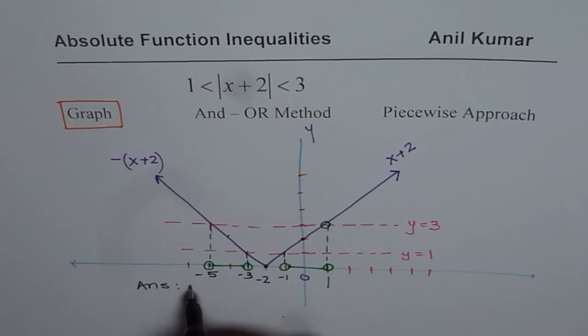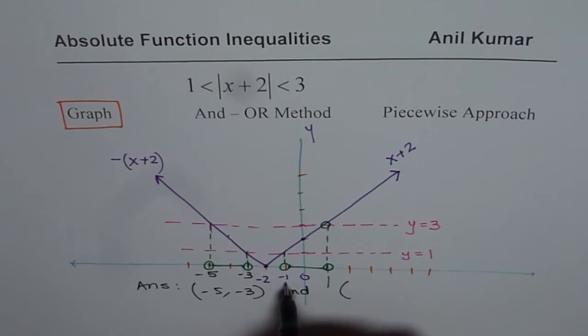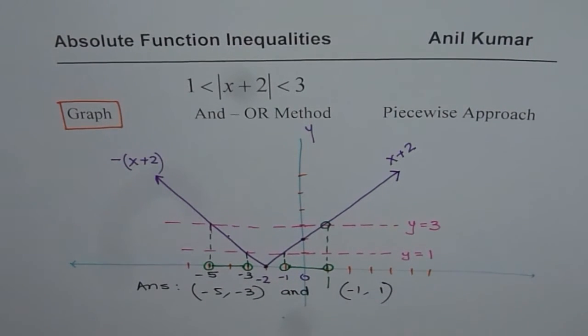So the answer is between minus 5 to minus 3 and minus 1 to 1. So that becomes the solution for this absolute inequality. I hope you understand and appreciate how we can solve absolute inequality with the help of a graph.